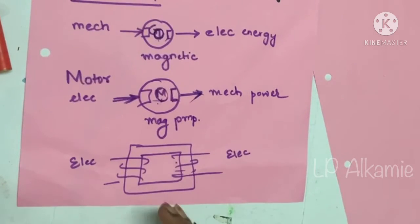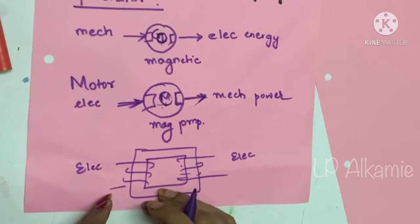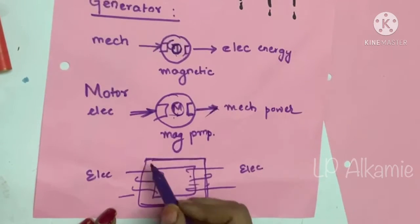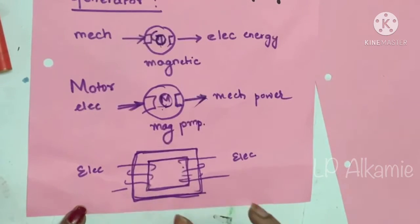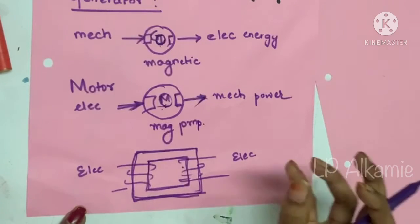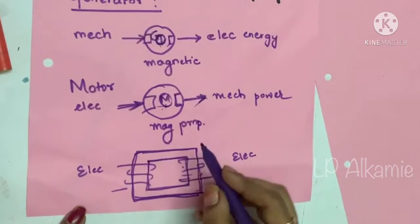But here the windings are electrically isolated but magnetically coupled due to this core. Yes, this is a magnetic core, and since the two windings are placed on this common magnetic core, and due to the electromagnetic induction property, the power is being transferred from one circuit to the other. So here also the common property is magnetic field.